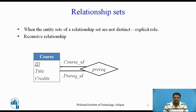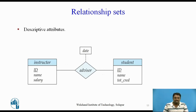For example, consider the entity set course that records information about all the courses offered in the university. To depict the situation where one course is a prerequisite for another course, we have a relationship set prerequisite that is modeled by an ordered pair of course entities. A relationship may also have attributes called descriptive attributes. Consider a relationship set advisor with entity sets instructor and student — we would associate the attribute date with that relationship to specify the date when an instructor became an advisor of a student.